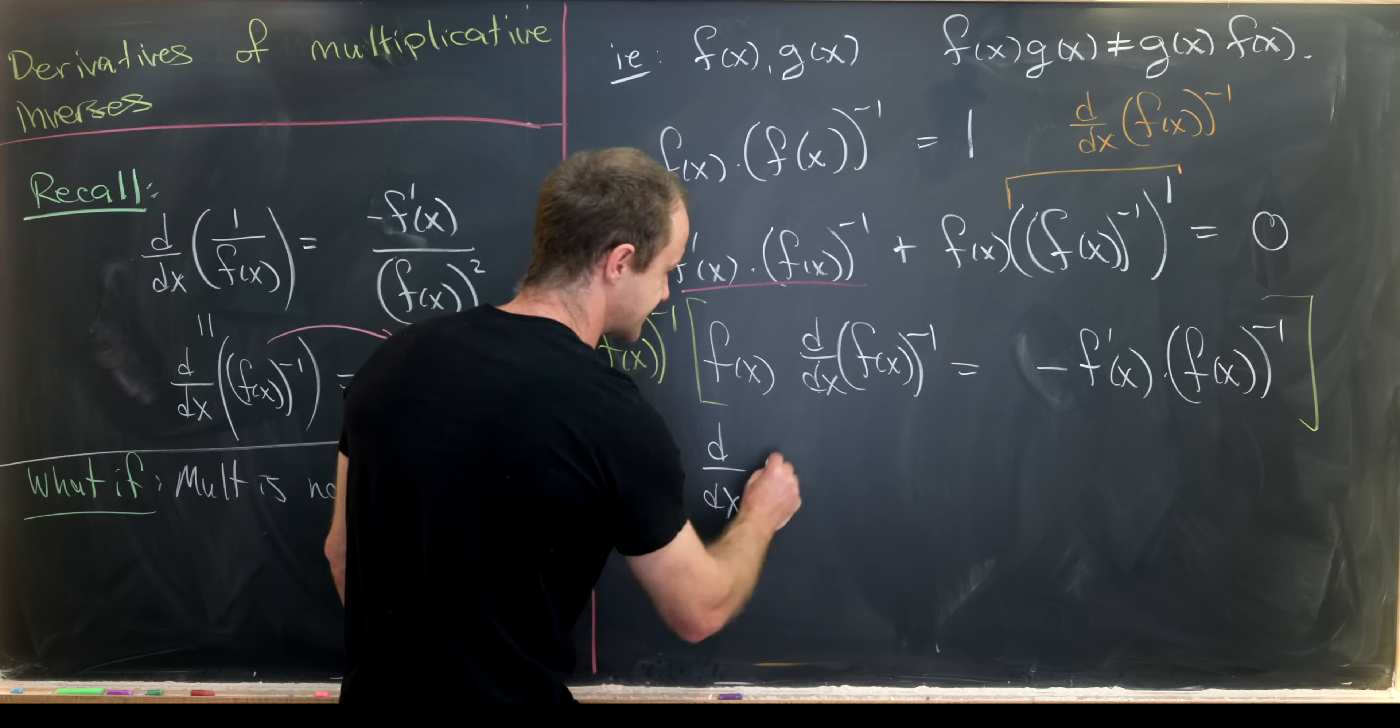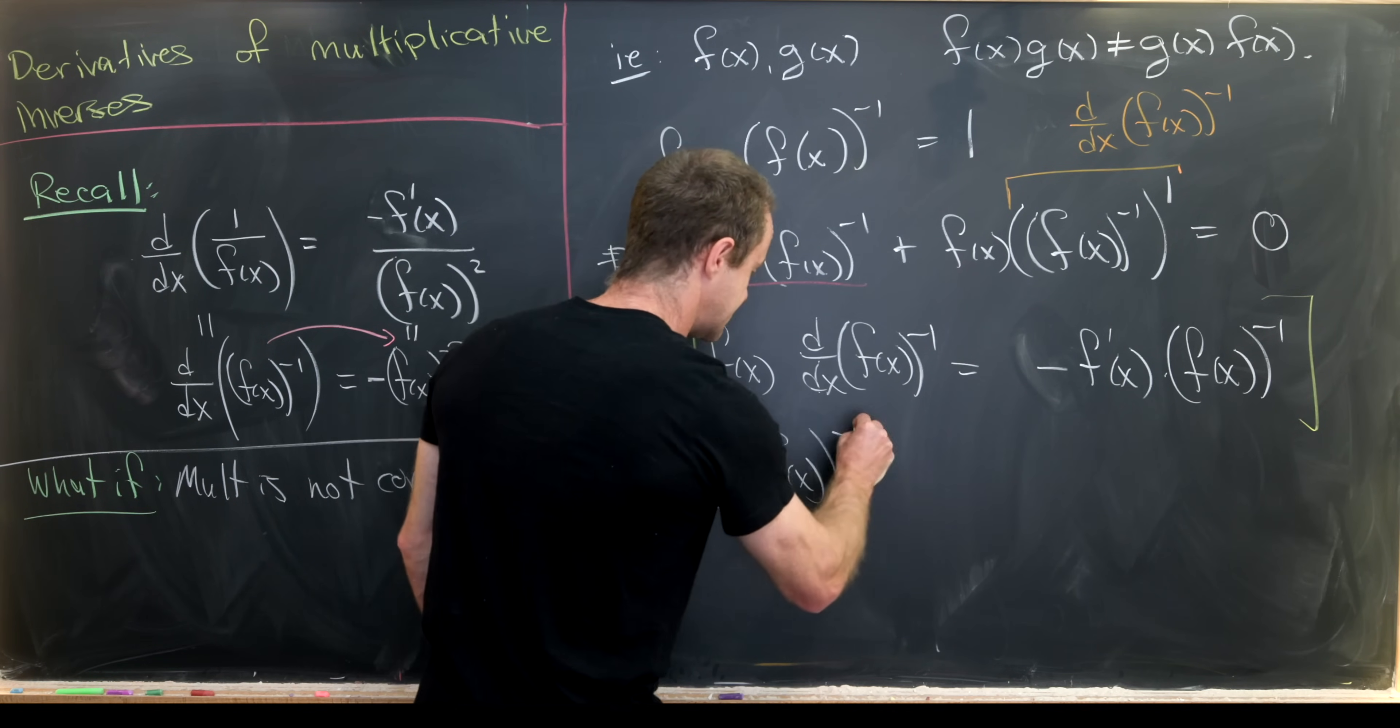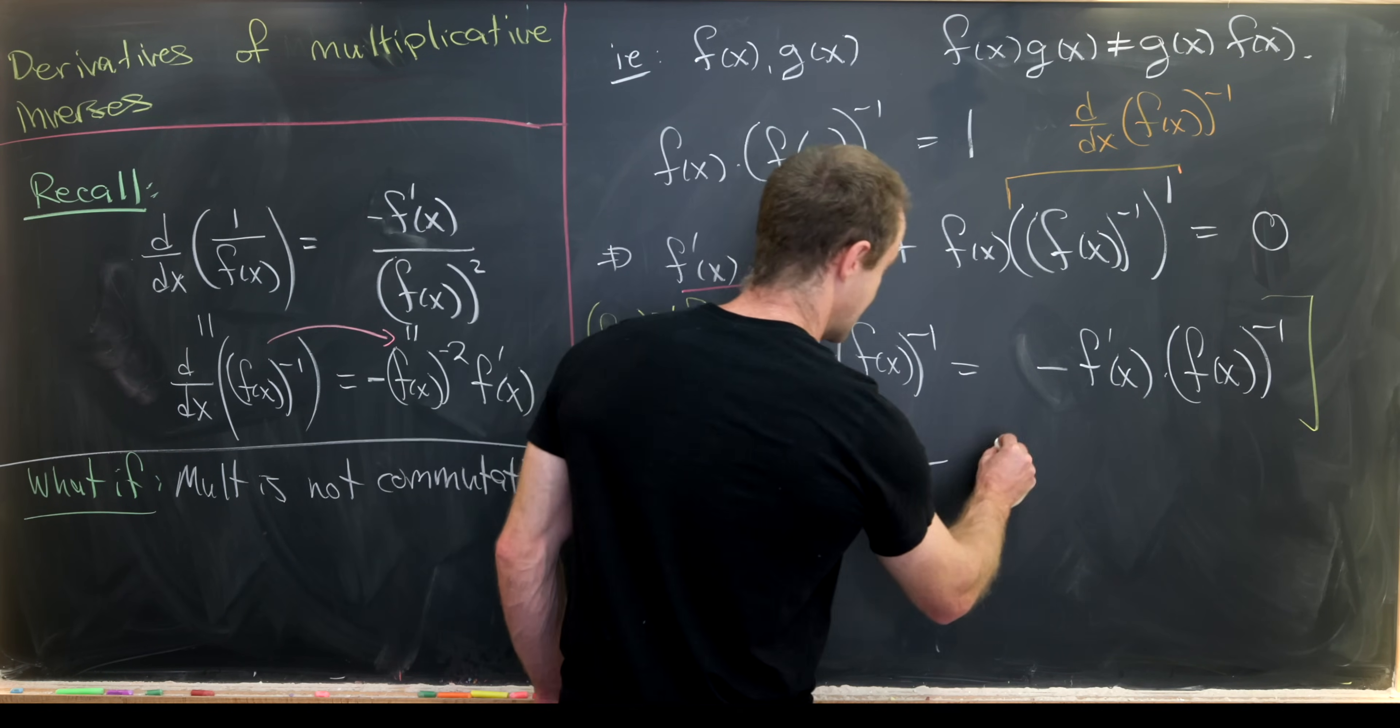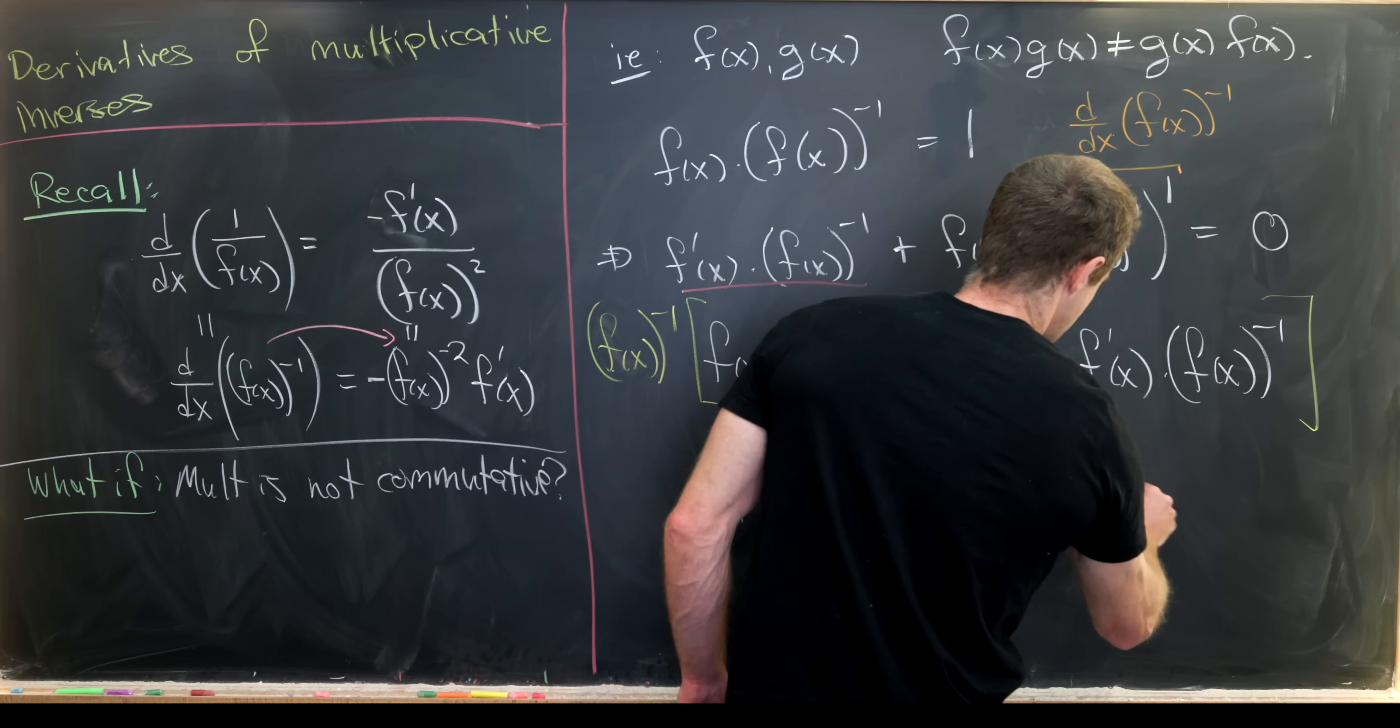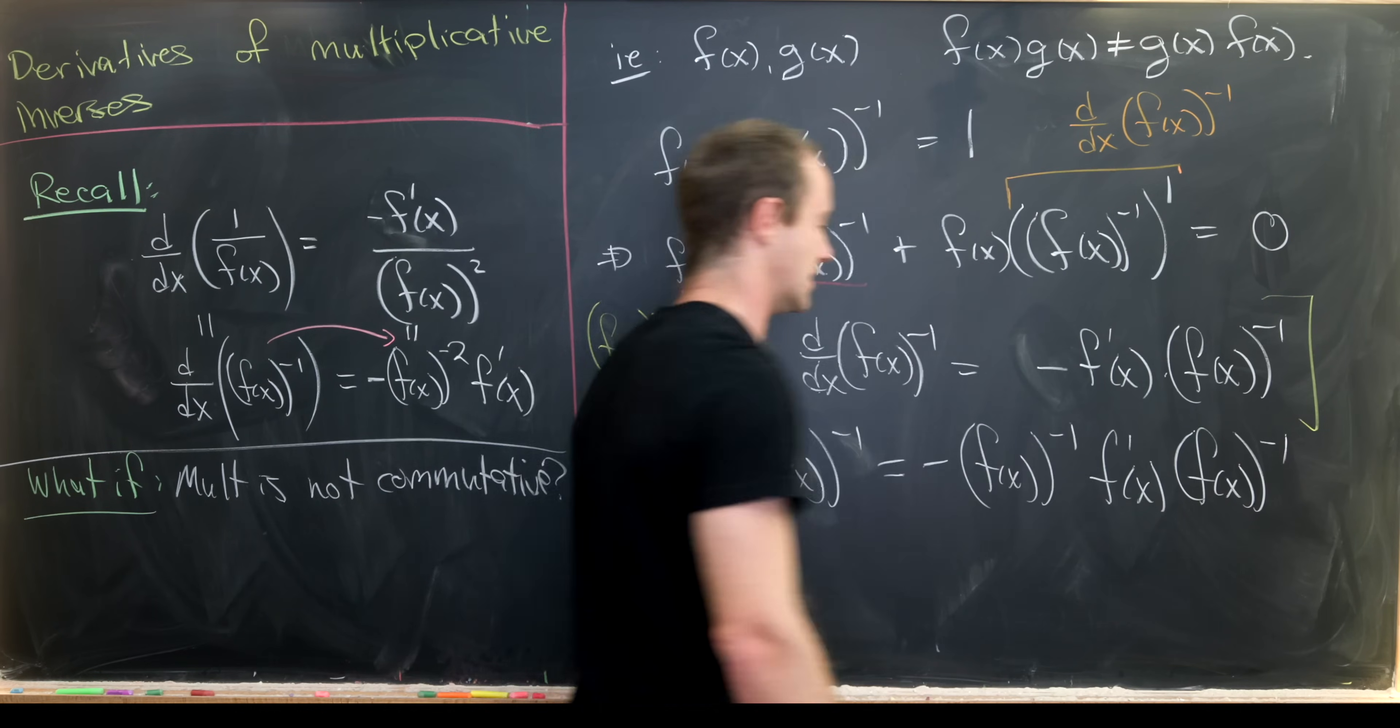That will be the derivative with respect to x of f(x) all to the negative 1 power is in fact equal to negative f(x) to the negative 1 power times f'(x) times f(x) to the negative 1 power.